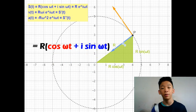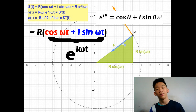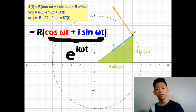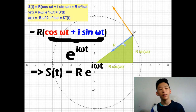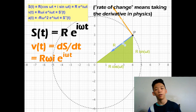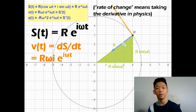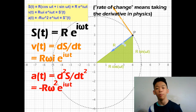Using Euler's formula, e to the i theta equals cosine theta plus i sine theta, we can write this as e to the i omega t. So the position function with respect to time is r times e to the i omega t. To get velocity, you take the rate of change once, giving r omega i times e to the i omega t. To get acceleration, you take the rate of change twice, giving negative omega squared r times e to the i omega t.